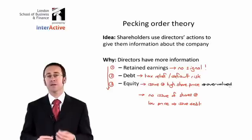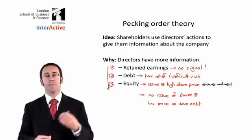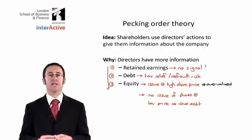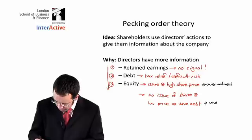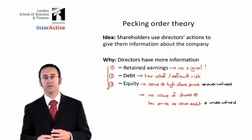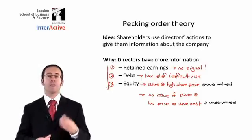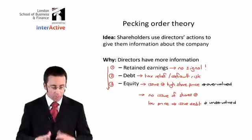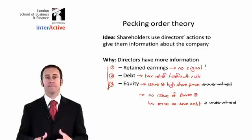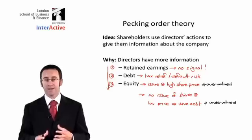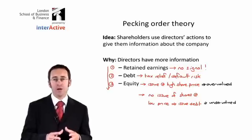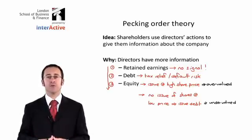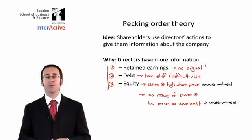We then need to consider that if the directors have issued debt based upon the level of default risk and the tax savings, it could be that as the share price is low, shareholders may believe the shares are undervalued. If the shares are undervalued, shareholders will buy more and more shares and ultimately push that price higher and higher. That gives you an idea of the pecking order — retained earnings, debt, and equity — and how shareholders use that pecking order to make decisions about buying or selling shares.